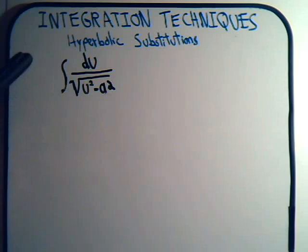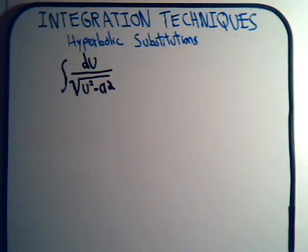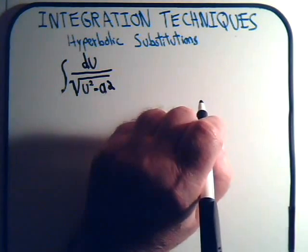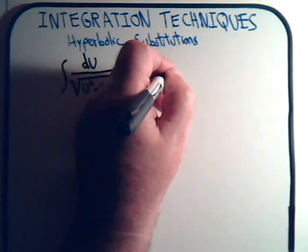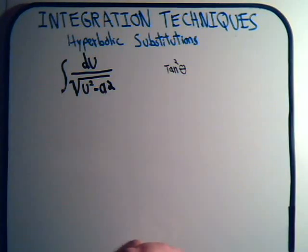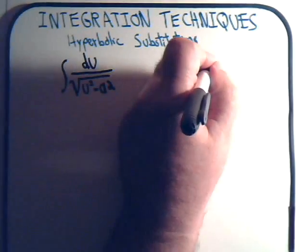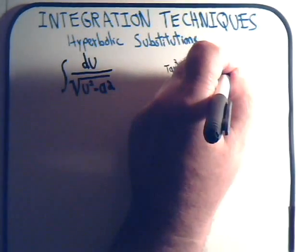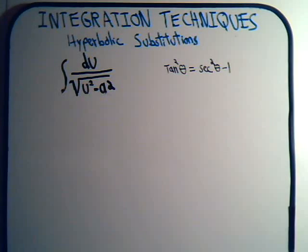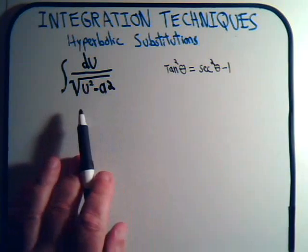If we have an integral of this general form, where we have a variable squared minus a constant squared, hopefully that reminds you of the hyperbolic tangent squared of theta, which is equal to the hyperbolic secant squared of theta minus 1 — a variable squared minus a constant, the same general form.